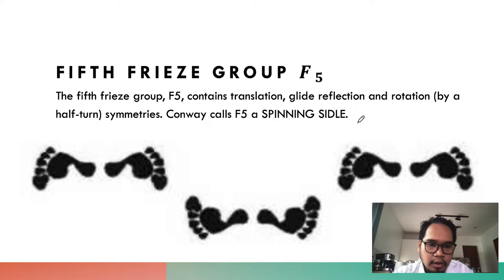F-sub-5, the 'spinning saddle,' contains translation, glide reflection, and rotation by a half-turn symmetry. From a motif you reflect it, then glide reflect, then reflect again and translate — so you can see the image of how a spinning saddle works.